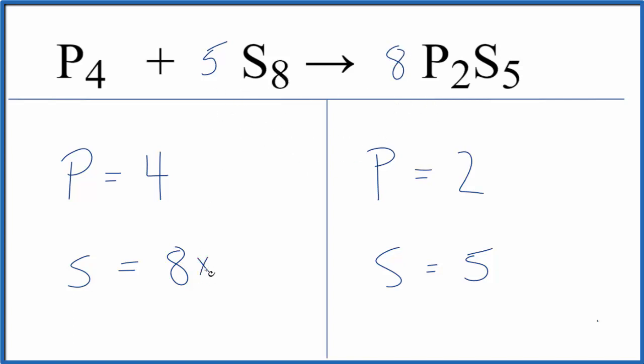So I have eight times five. That does give me 40. And then five times the eight. That gives me 40 as well. So those are balanced.